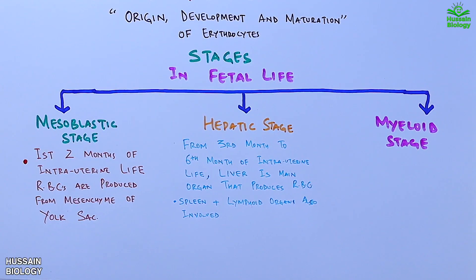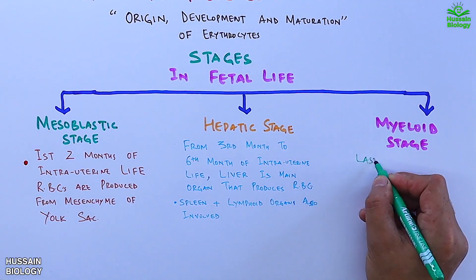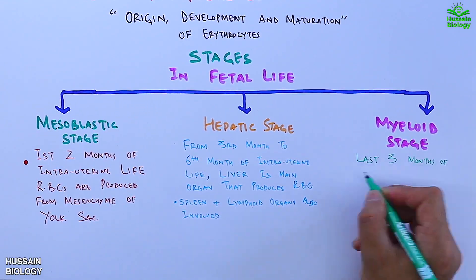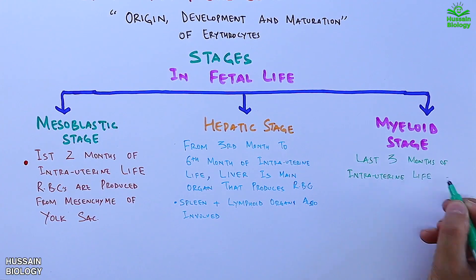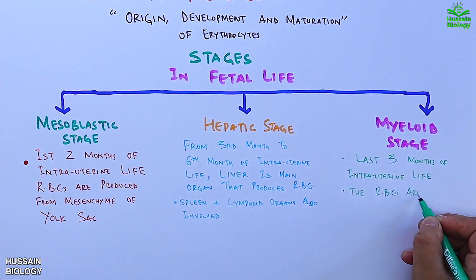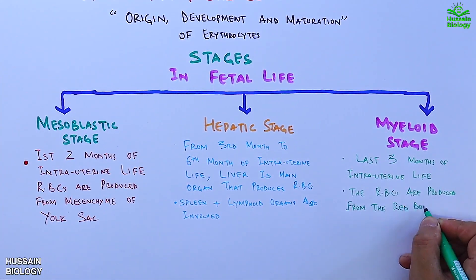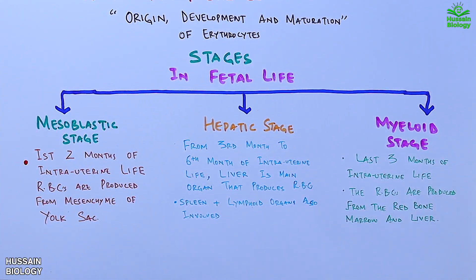Then we have the myeloid stage, which is the last three months of intrauterine life, where RBCs are produced from the red bone marrow and liver.